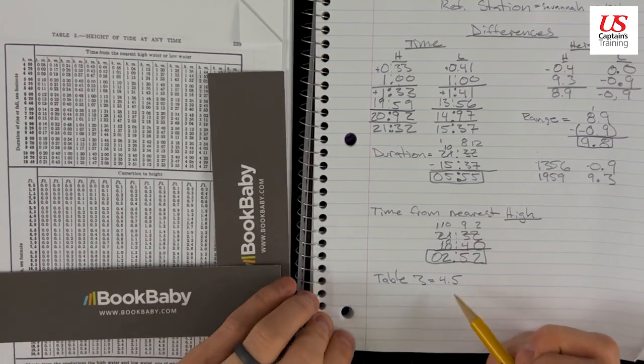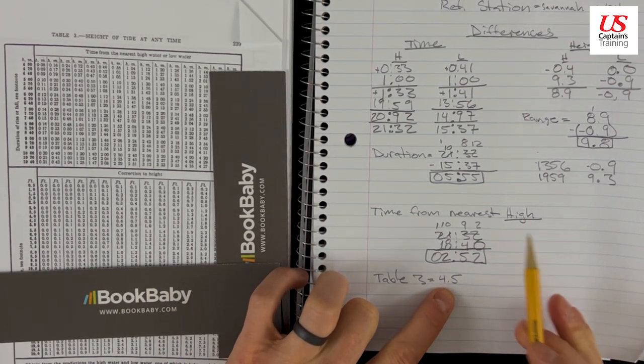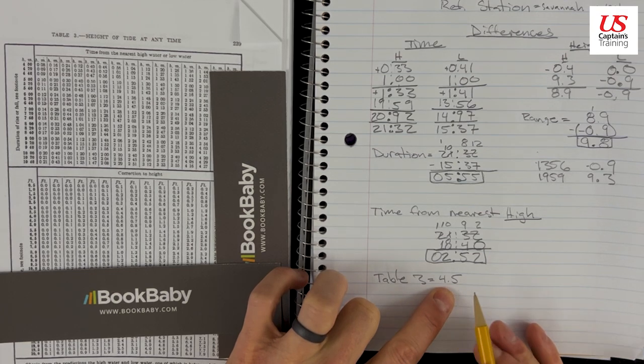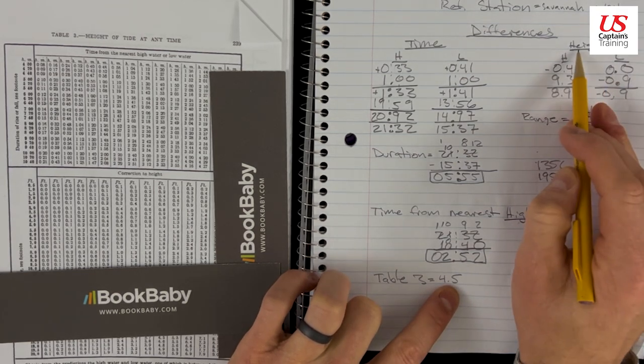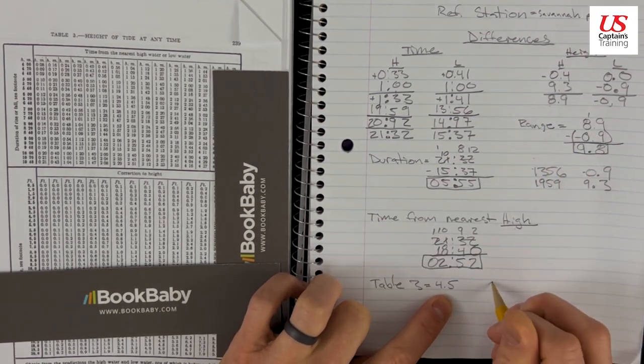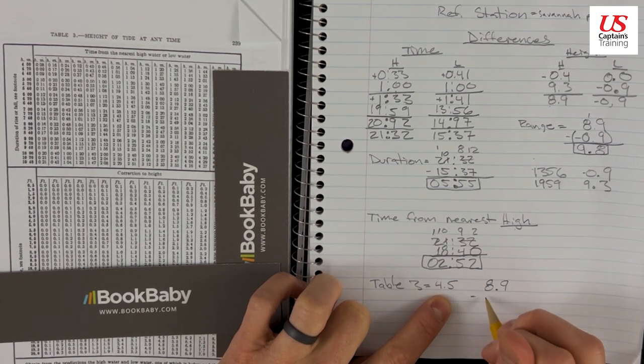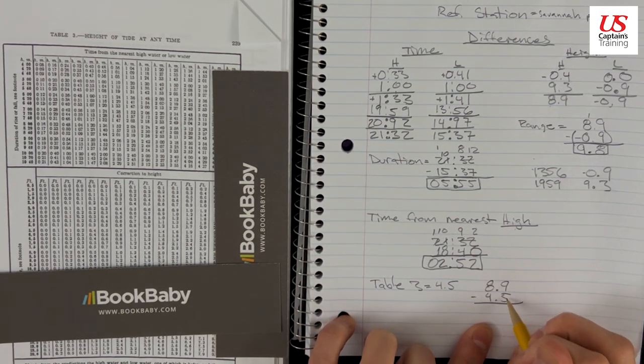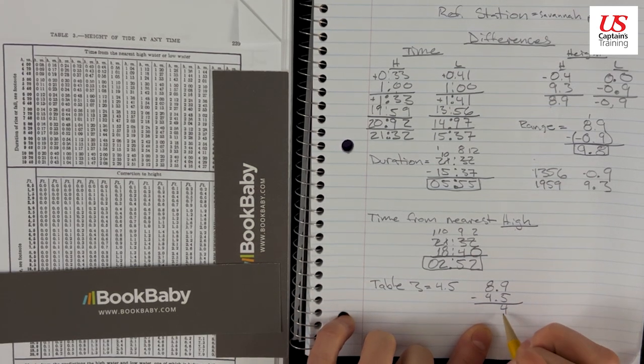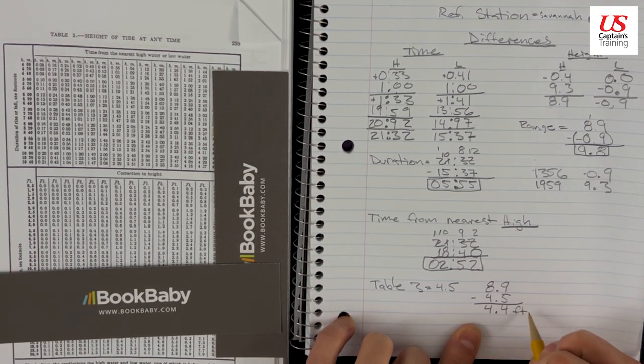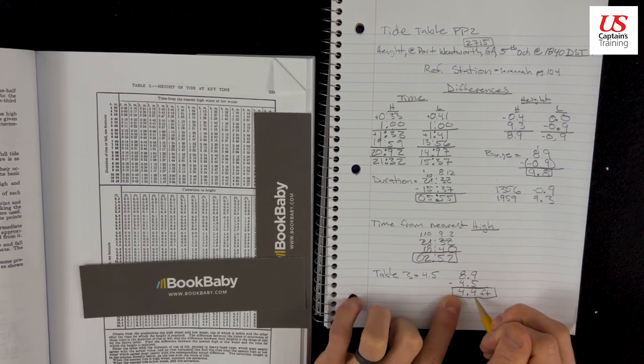And now what do we do? Do we add or subtract this? Well, we're time from nearest high. If we're at the high, we can't go any higher. We can only go lower. So this will be subtracted from the high. The height of the high was 8.9. So 8.9 minus 4.5 should give us the height. 9 minus 5 is 4. 8 minus 4 is 4. 4.4 feet is the height of the tide.